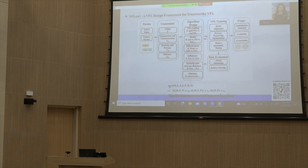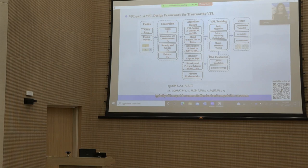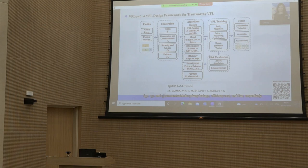MP denotes the measurement for privacy leakage imposed by attacks K against defense strategy P. ME is the efficiency measure typically with respect to communication load and computation resources. MB measures system bias. Epsilon_P, Epsilon_E, and Epsilon_B are constraints for privacy leakage, efficiency cost, and bias, respectively.